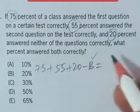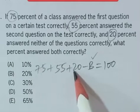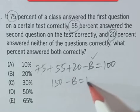Total, because we are talking about percent, total is 100. Now, 75 plus 55 plus 20 is 150 minus B is equal to 100.